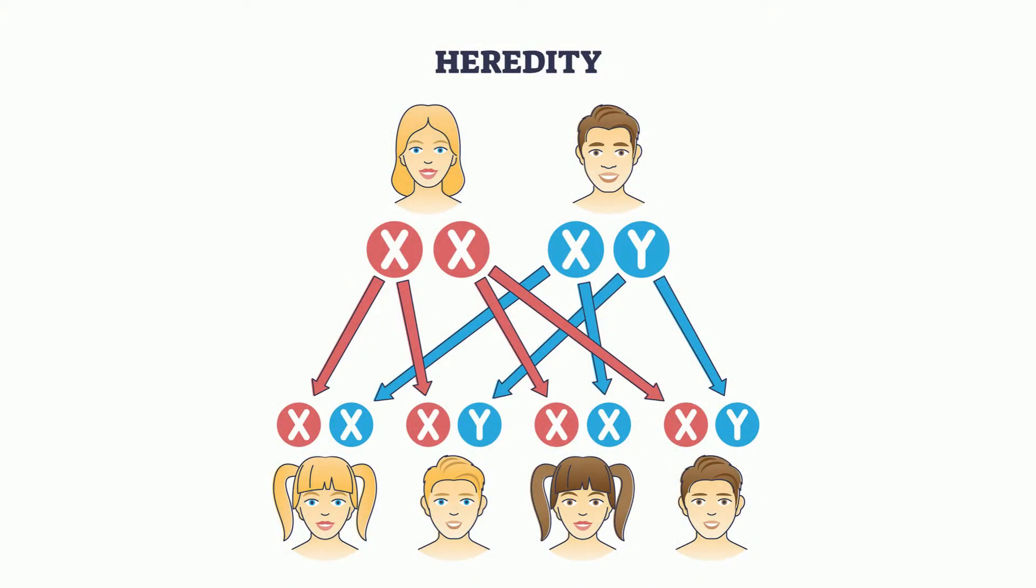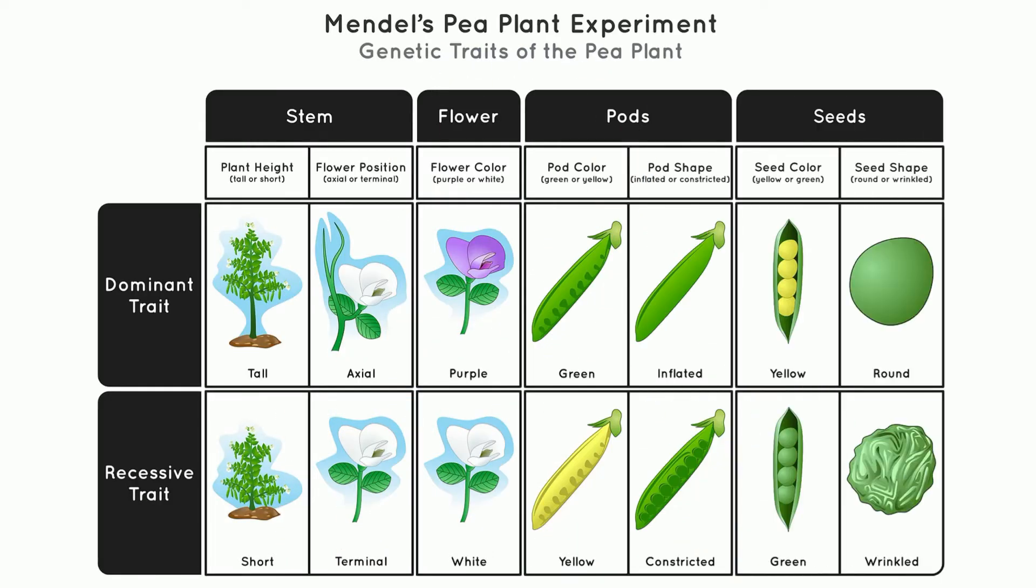By using the monastery's garden, Mendel worked with seven characteristics of pea plants. With the stem, was it tall or short? Is it axial or terminal? Was the flower purple or white? Were the pods green or yellow, inflated or constricted? And the seed, were they yellow or green, round or wrinkled?